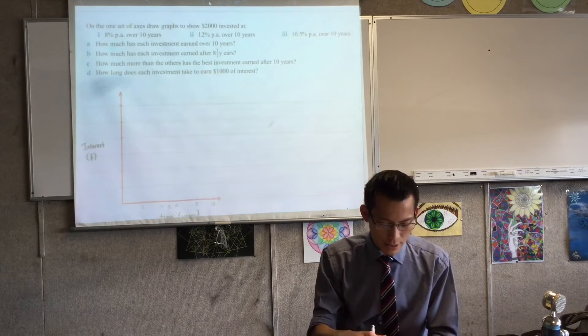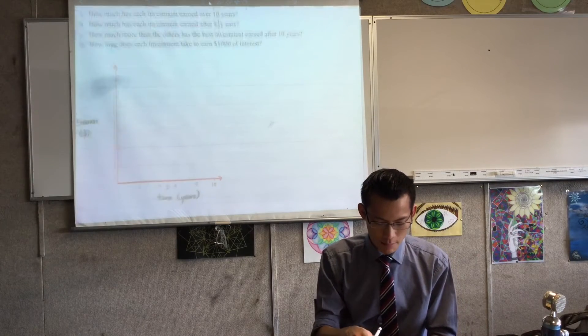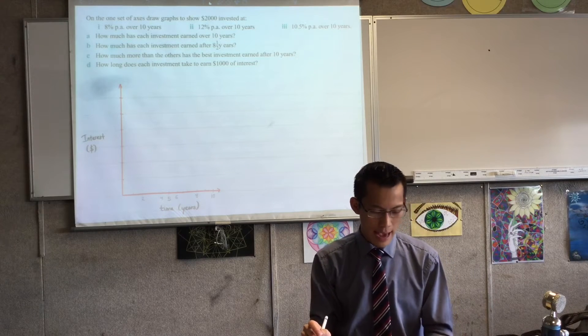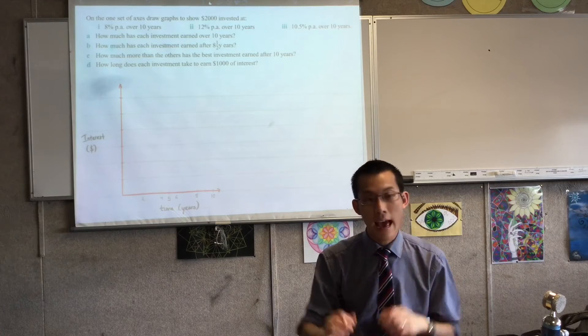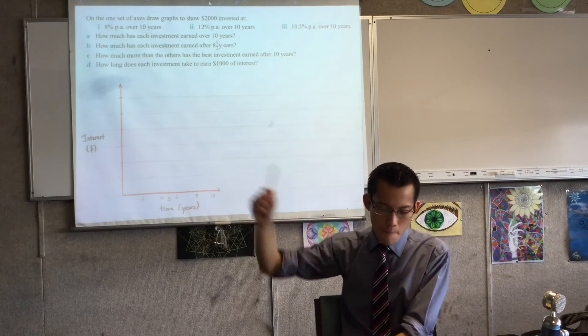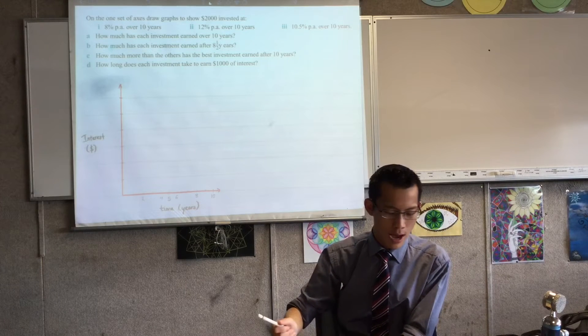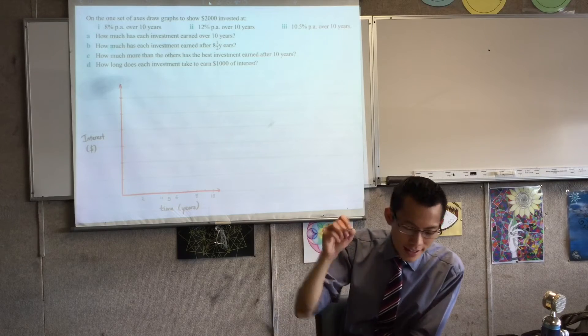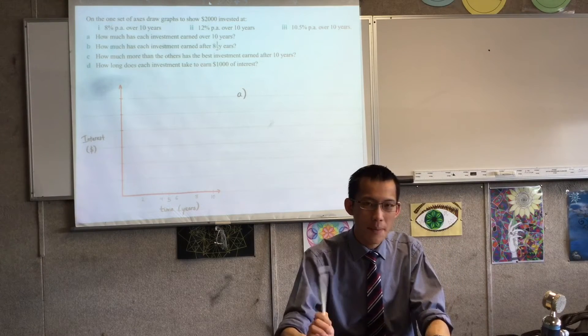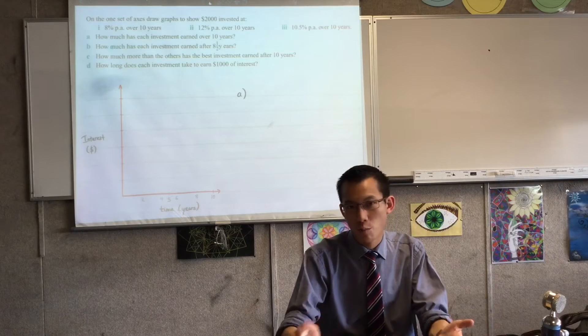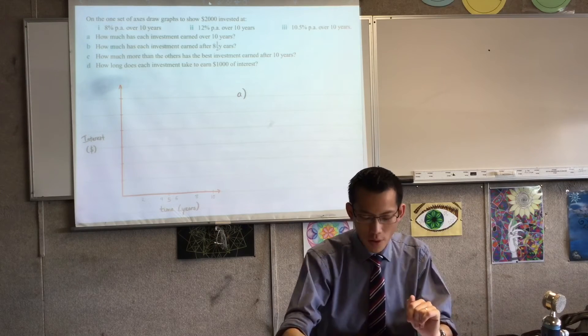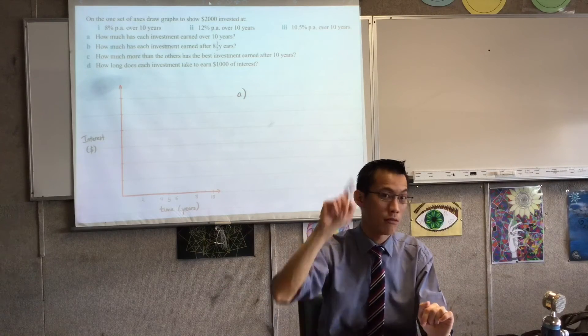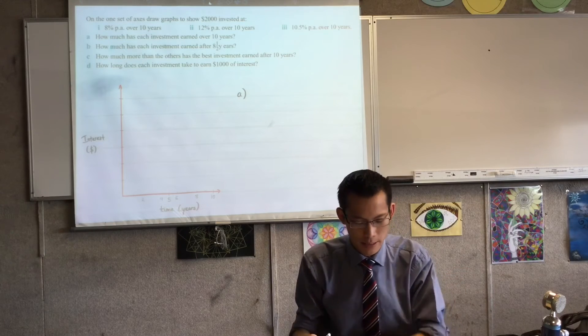I actually think in order to graph this well and make sure your graph is accurate for parts one, two, and three, I think it will actually be helpful to answer part A first, because I've worked out how far across I should go, 10 years, but I don't know how high I should go. Should the highest value be $100, $1,000, $10,000? I don't actually know yet until I answer part A. So if I want to work out what's happening after 10 years, I just need to use my I equals PRN formula. And I can work out what's the maximum number. Then I'll know how far the graph is supposed to go up.